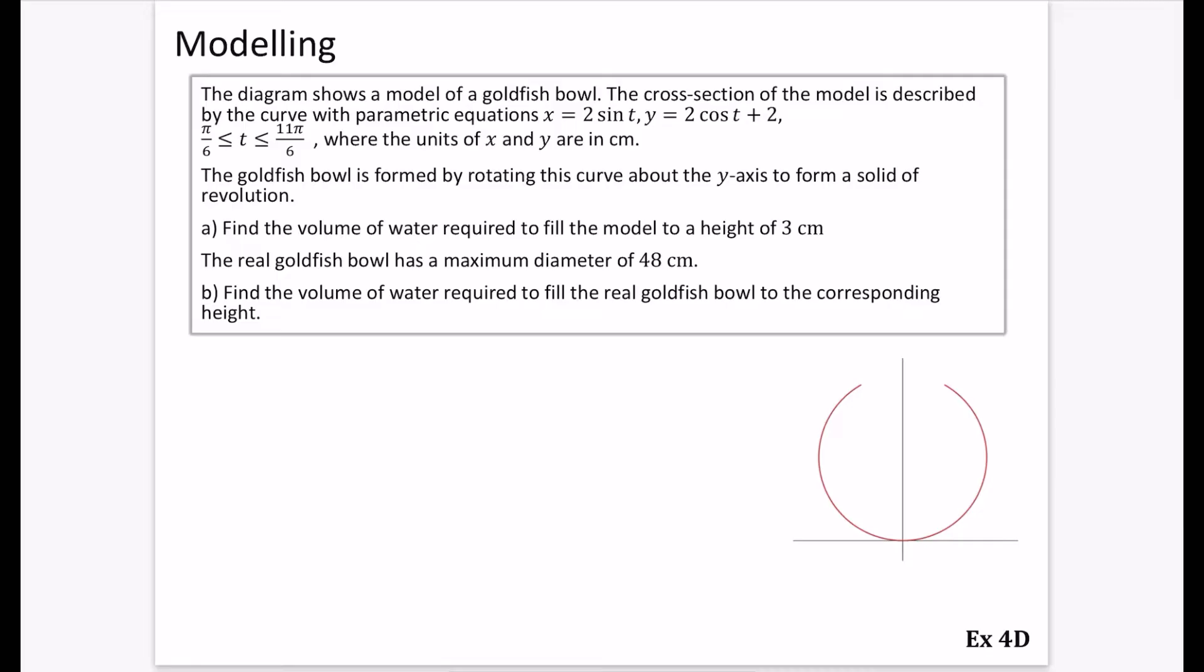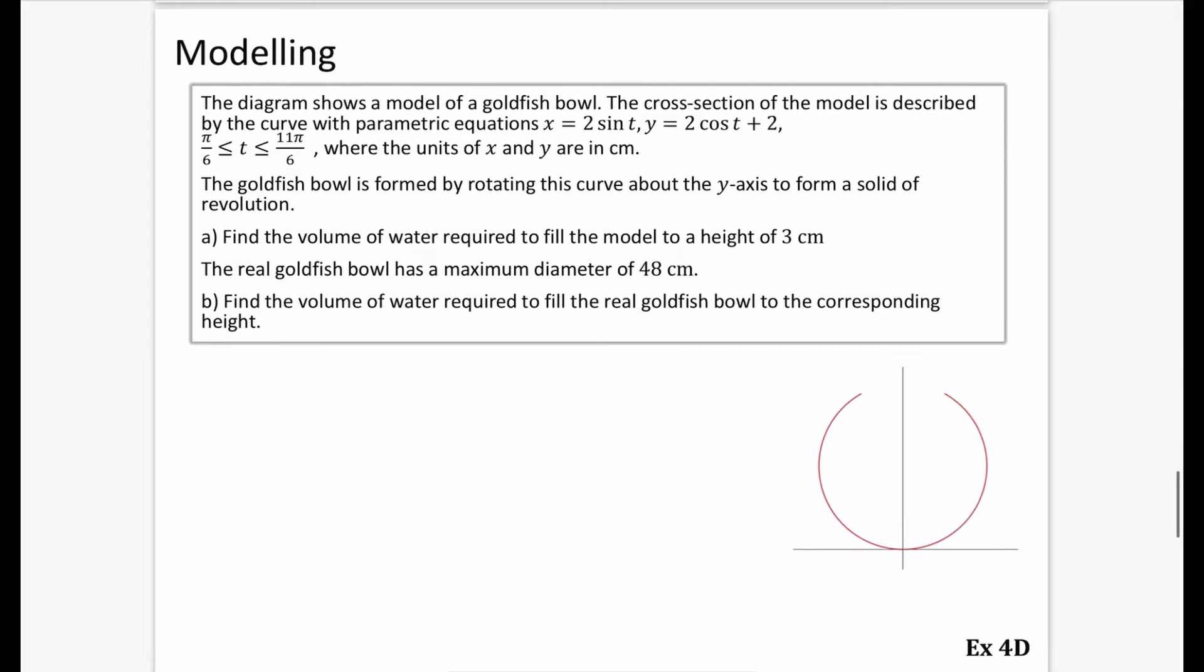The diagram shows a model of a goldfish bowl, and the cross-section of the model is described by the curve with parametric equations x = 2sin(t) and y = 2cos(t) + 2. The domain for t is between π/6 and 11π/6, where the units of x and y are in centimeters. The fact that we don't have all values of t is why we're having it starting at one point and finishing at another point.